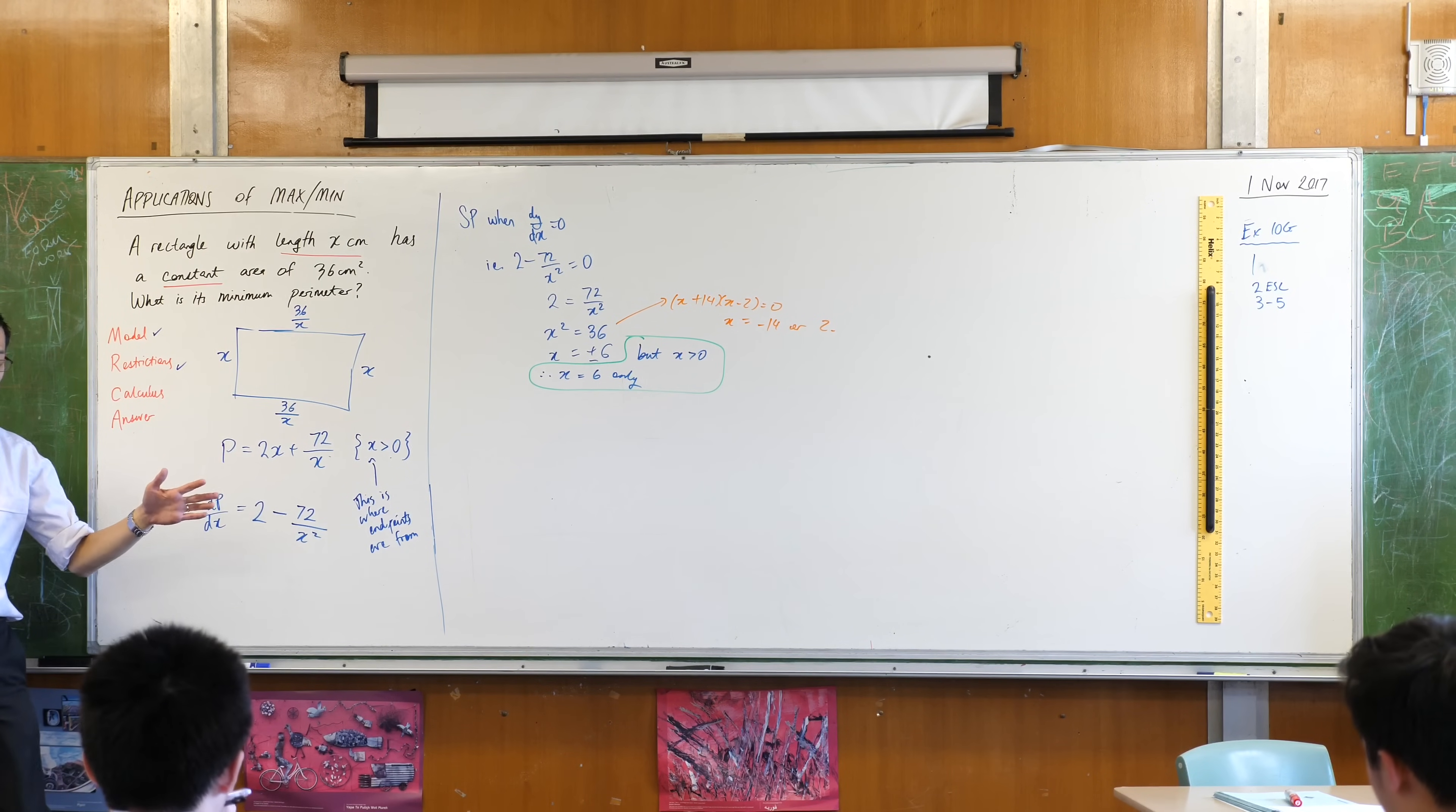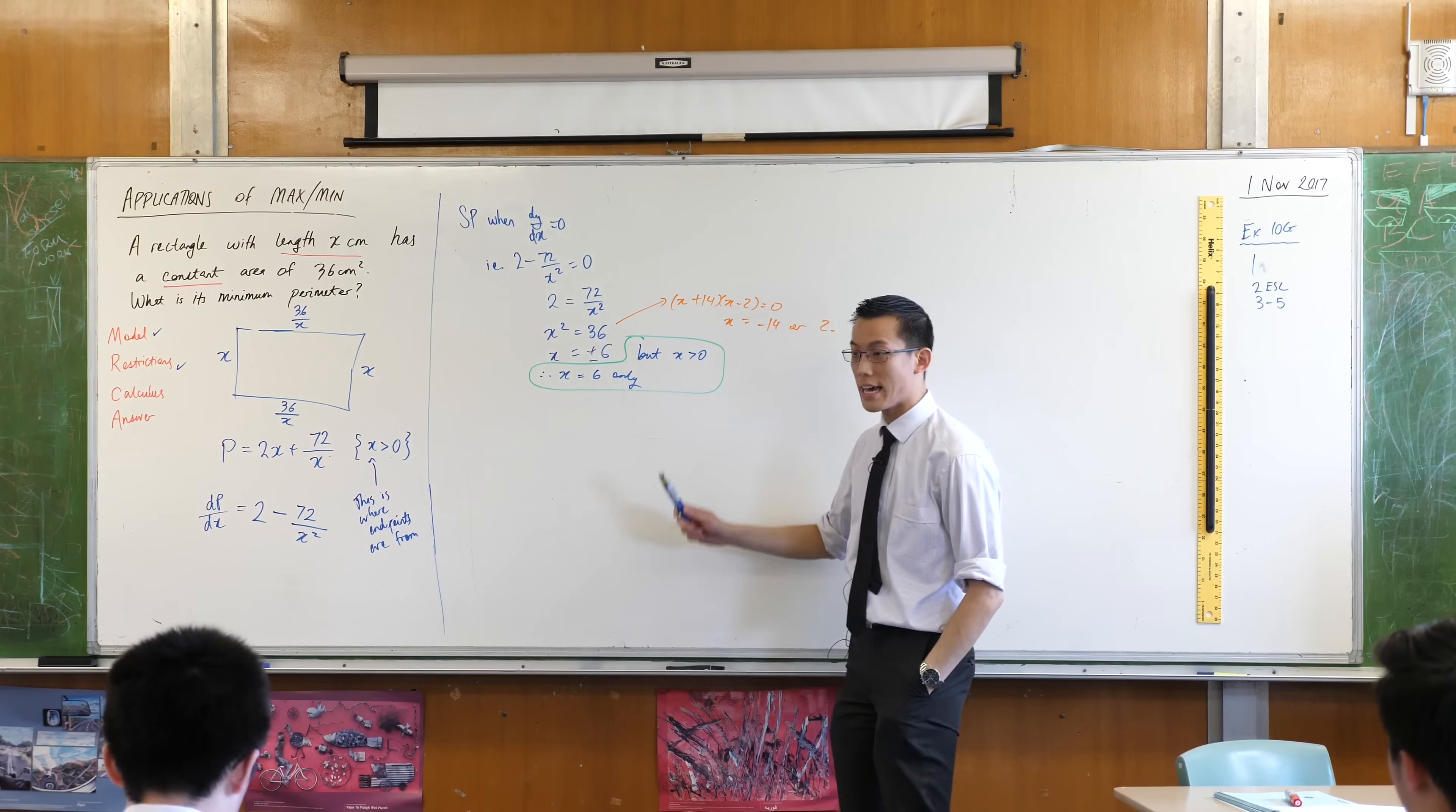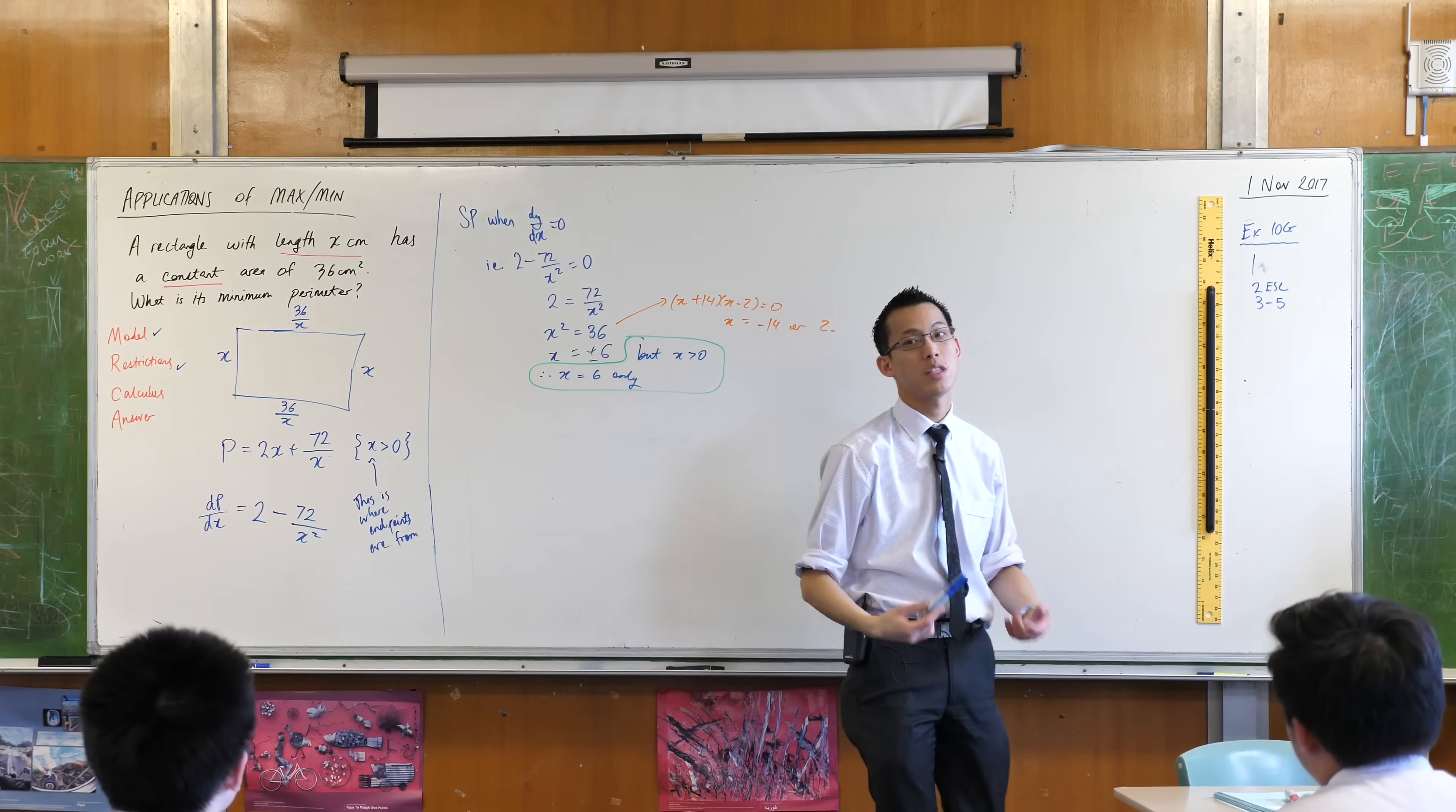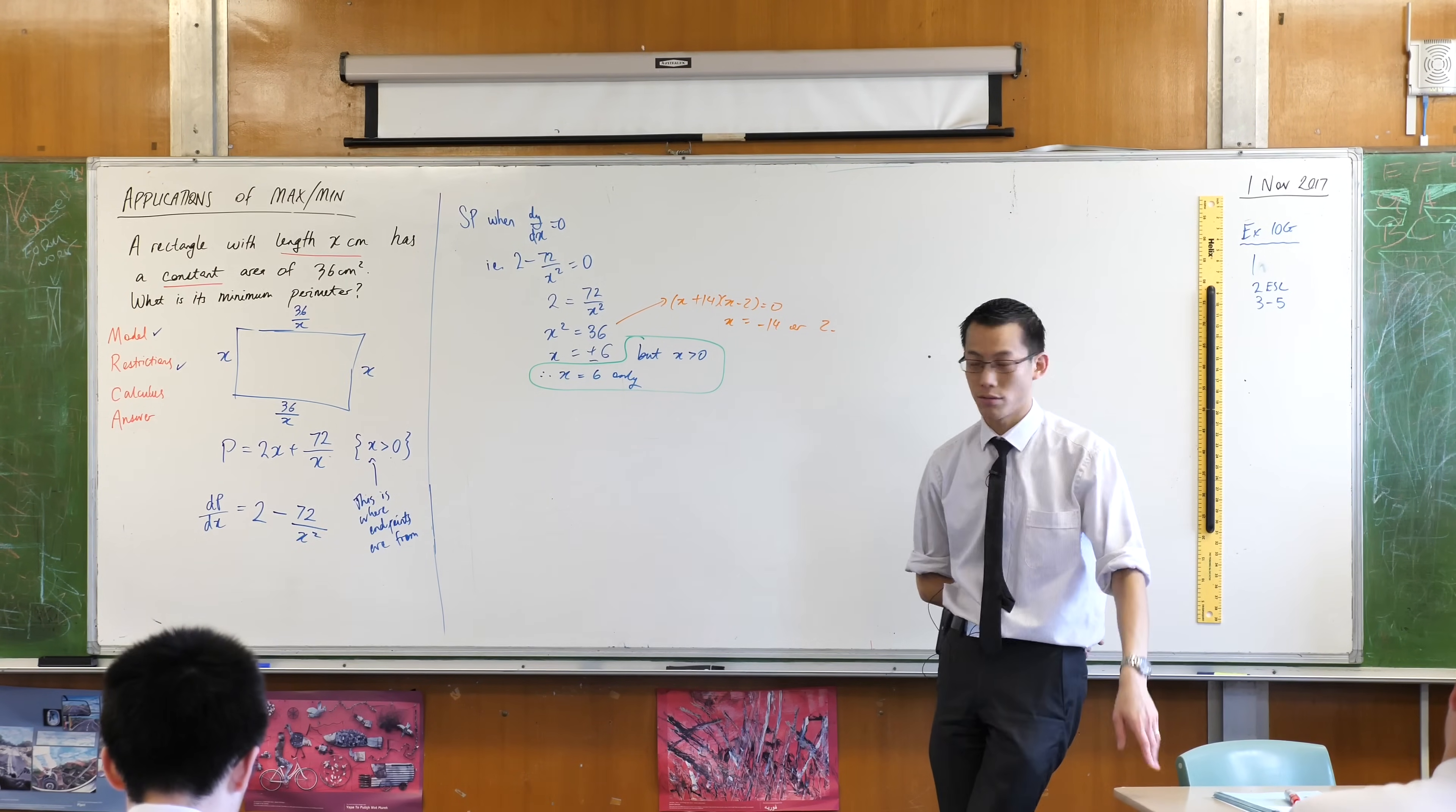So I've done my model. I've done my restrictions. Have I finished with calculus? Am I done? What have I established so far? You can work this out. This is why your connective tissue, your words and that kind of thing, are so important. What have I done? I've only found stationary points, but I'm looking for a minimum. So I actually have to go a little bit further to establish that this is a minimum.